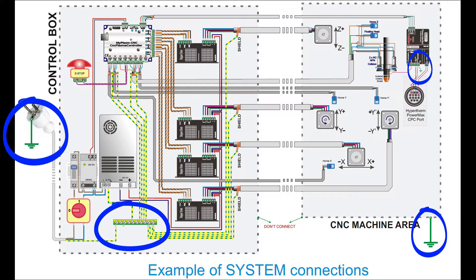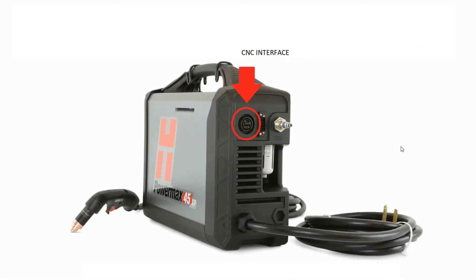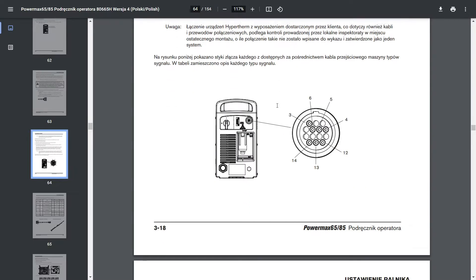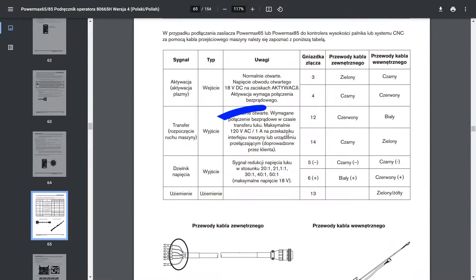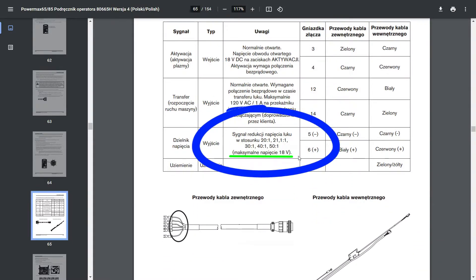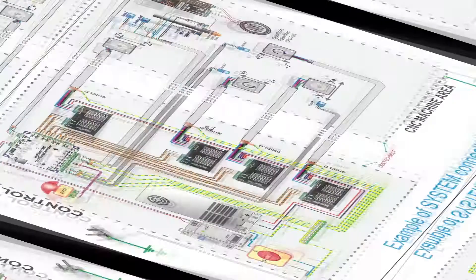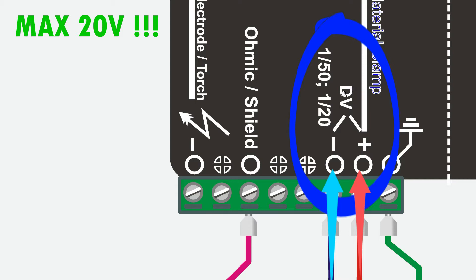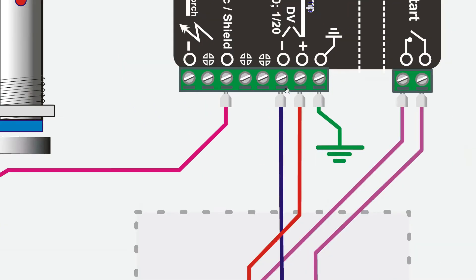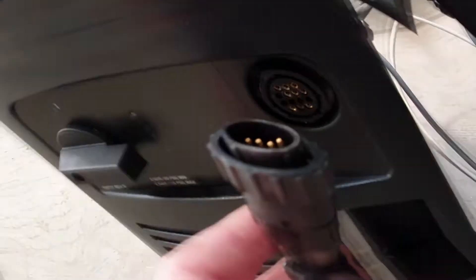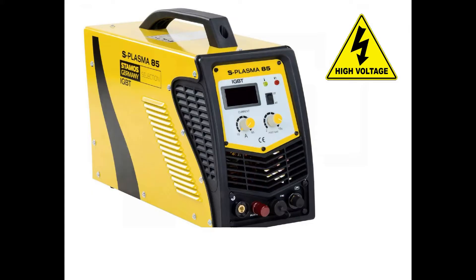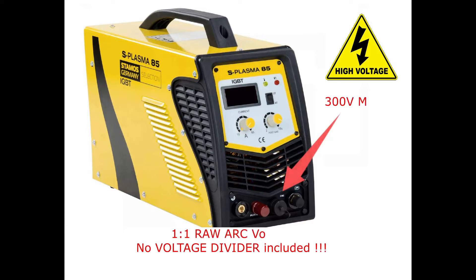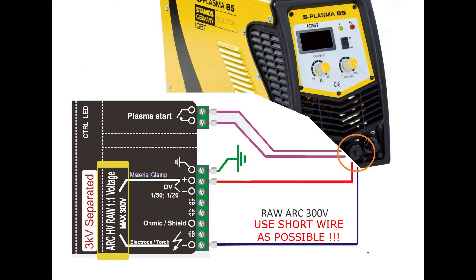If the source has an output for the THC height control system, check the output voltage. Voltage up to 20 volt standard divisions 150/120 should be connected to the DV low voltage input. If the output voltage from the cutter is a raw arc voltage 1-on-1, it should be connected to the high voltage input 300 volt.